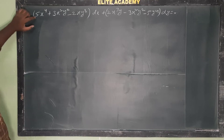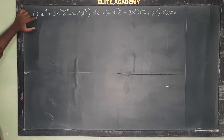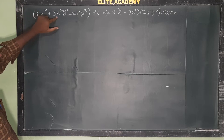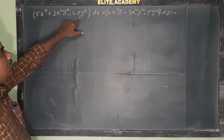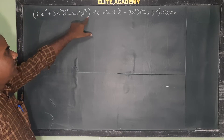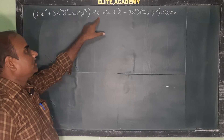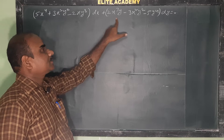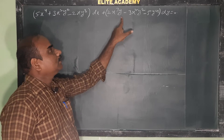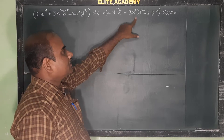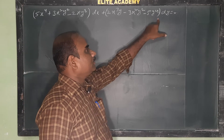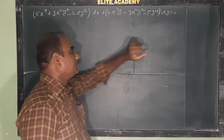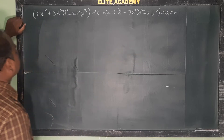The given differential equation is: 5x⁴ + 3x²y² − 2xy³ dx + 2x³y − 3x²y² − 5y⁴ dy = 0.